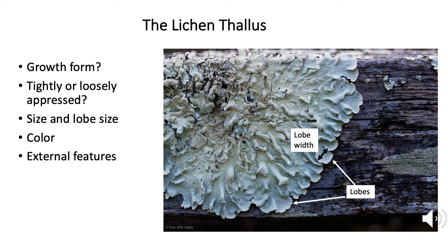A lichen thallus is generally made up of lobes, and those lobes may be tightly appressed — that's with an A, not an O — to the substrate, or loosely appressed, or not attached at all. When you look at a lichen and want to identify what it is, the first things you're going to consider are: what substrate it's growing on, what shape is the lichen and its lobes, what growth form does it have, the shape and size of the lobes (measured widthwise at the widest part, as the black arrow shows), and the presence of any external features you can see on either side of it.